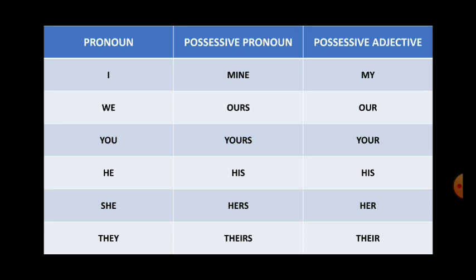For the pronoun 'she,' we have the possessive pronoun 'hers' and the possessive adjective 'her.' We can say: 'These bangles are hers' or 'These are her bangles.' For the pronoun 'they,' the possessive pronoun is 'theirs' and the possessive adjective is 'their.' For example: 'Those cars are theirs' or 'Those are their cars.'